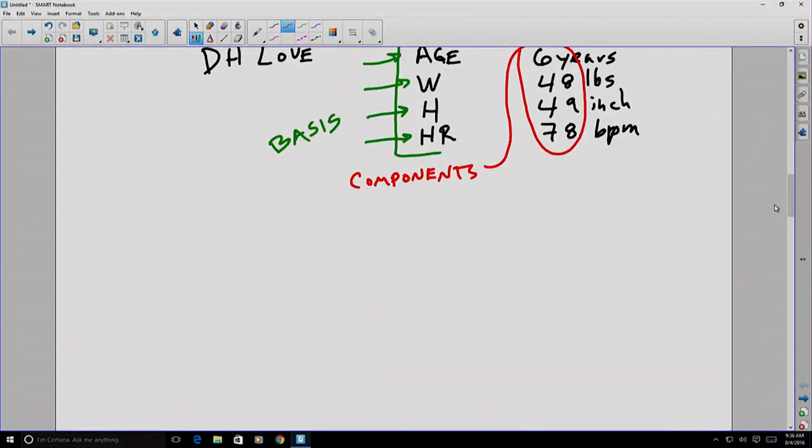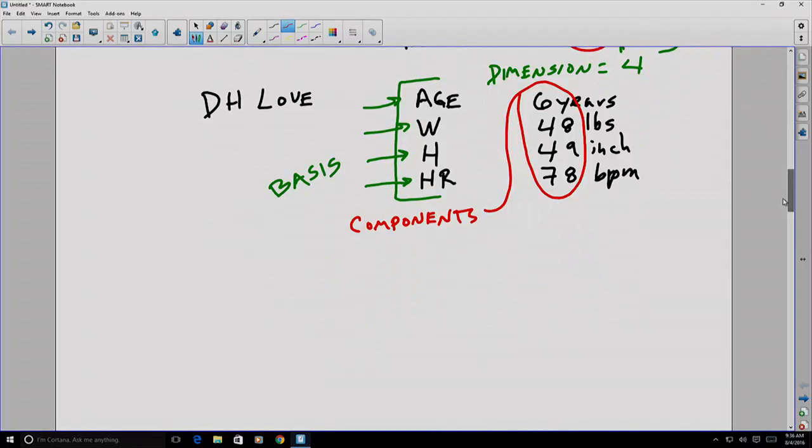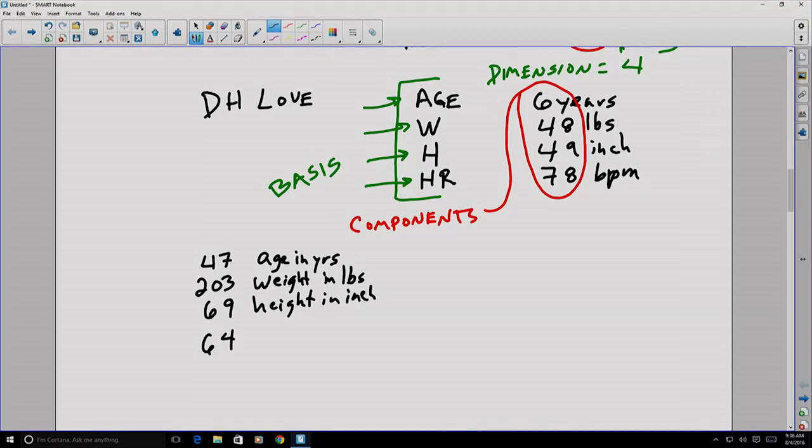Note that the same vector can be expressed using different combination of basis and components. For example, in our original case up here, we had the information 47, 203, 69, and 64, which made sense in the basis where we had the age in years, the weight in pounds, the height in inches, and the beats per minute, which is the heart rate.